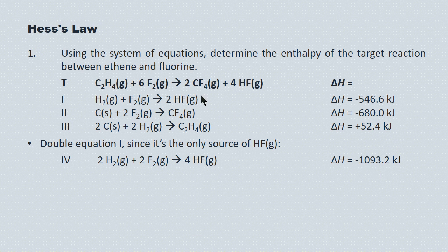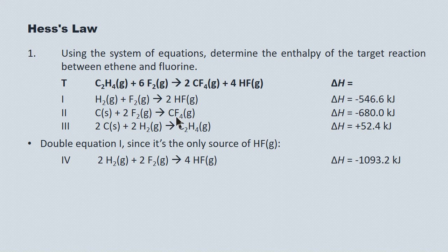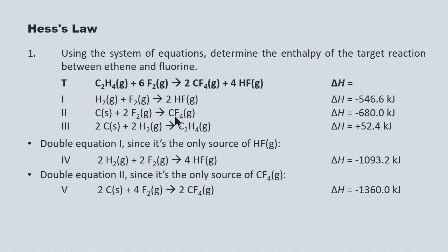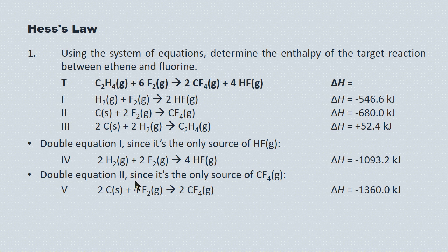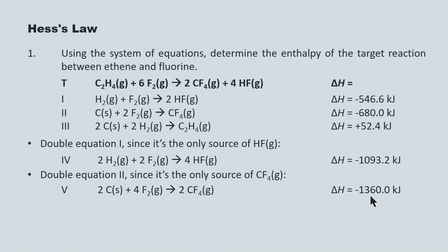Our second manipulation, then, we've got this CF4. And the only source of CF4 is equation two in the system of equations. But again, the target generates two moles of CF4, and this equation two only generates one. So equation two is going to have to be doubled as well. And that's our next manipulation of the system. You see, we've doubled it, and again, we've doubled the enthalpy. So we've doubled it to produce two moles of CF4, and we've doubled the enthalpy being released.